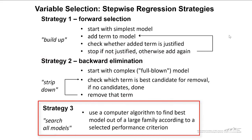And then the third strategy is to search all models. And we can use a computer algorithm or Minitab to find the best model out of a large family according to a selected performance criterion. And I'll show you an example of how we can do that in this screencast.